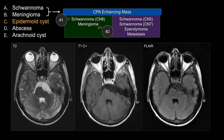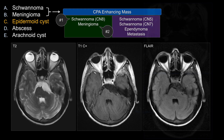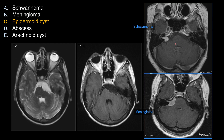Other less common but quite possible enhancing entities include other types of schwannoma involving the trigeminal or facial nerve, ependymoma, and metastasis. Vestibular schwannoma typically is a lesion within the internal auditory canal, sometimes with a wider base causing mass effect on the adjacent pons or middle cerebellar peduncle. When large, they tend to fill the entire internal auditory canal, creating a comb-shaped appearance — a classic appearance for vestibular schwannoma.